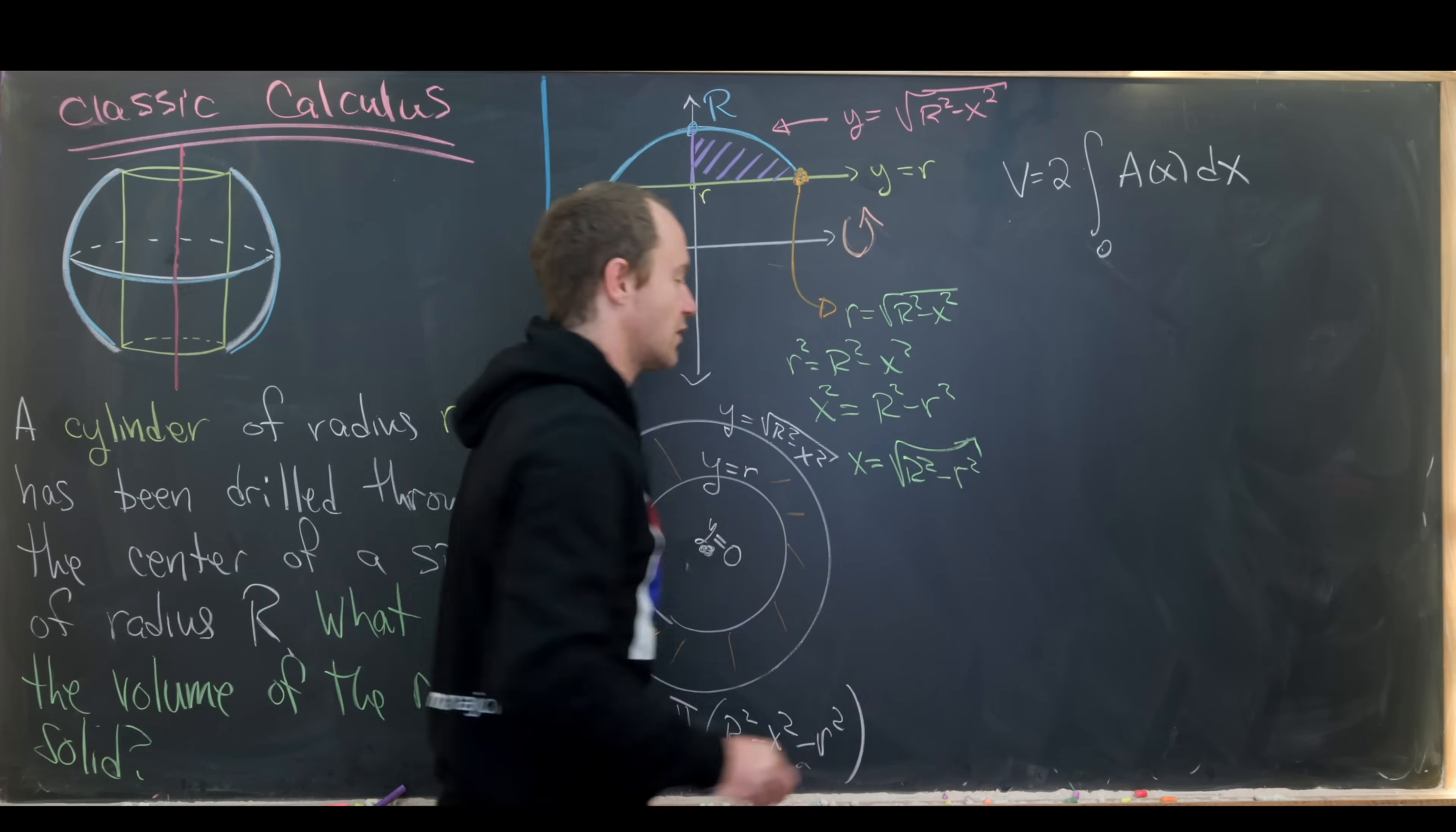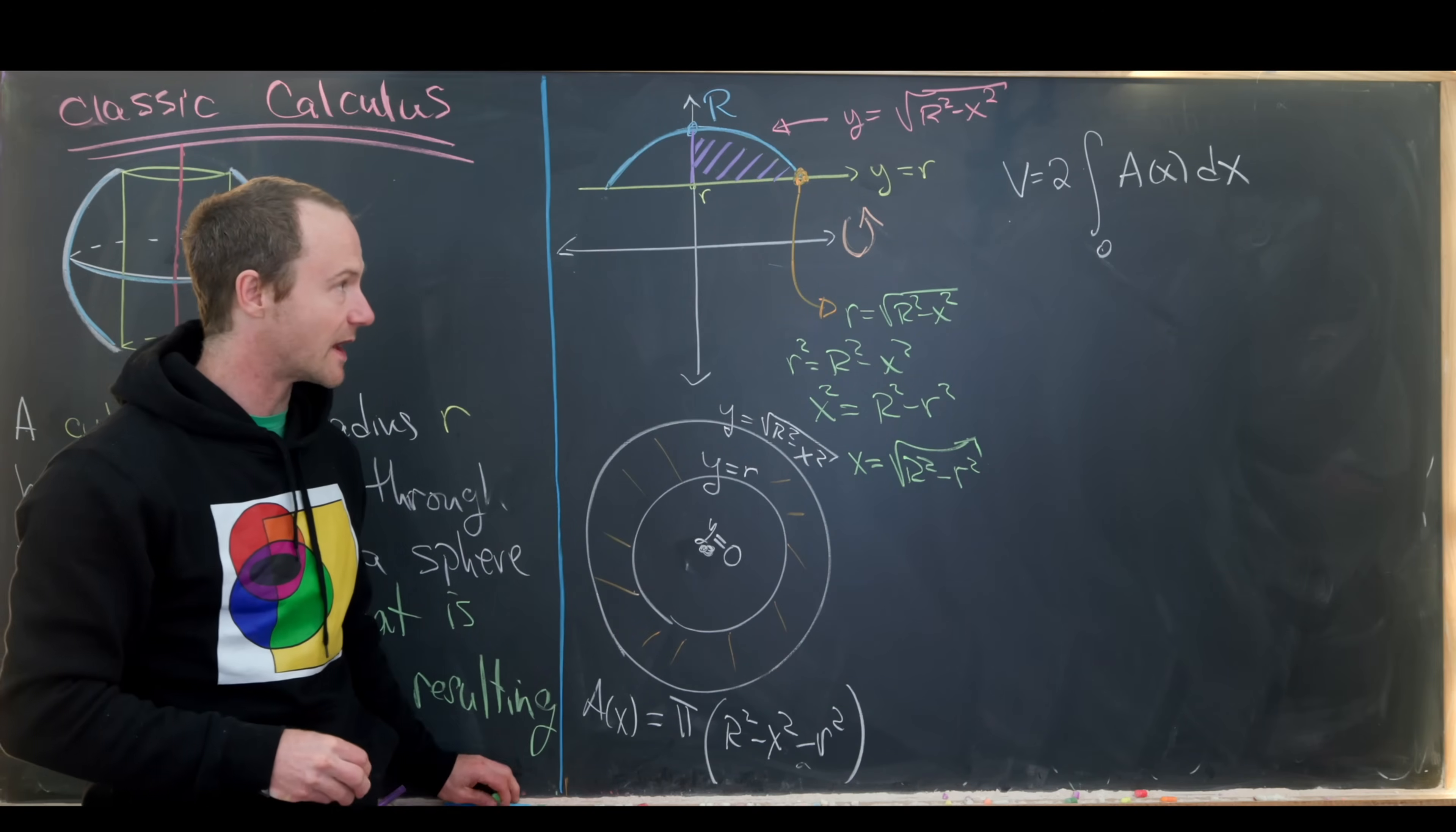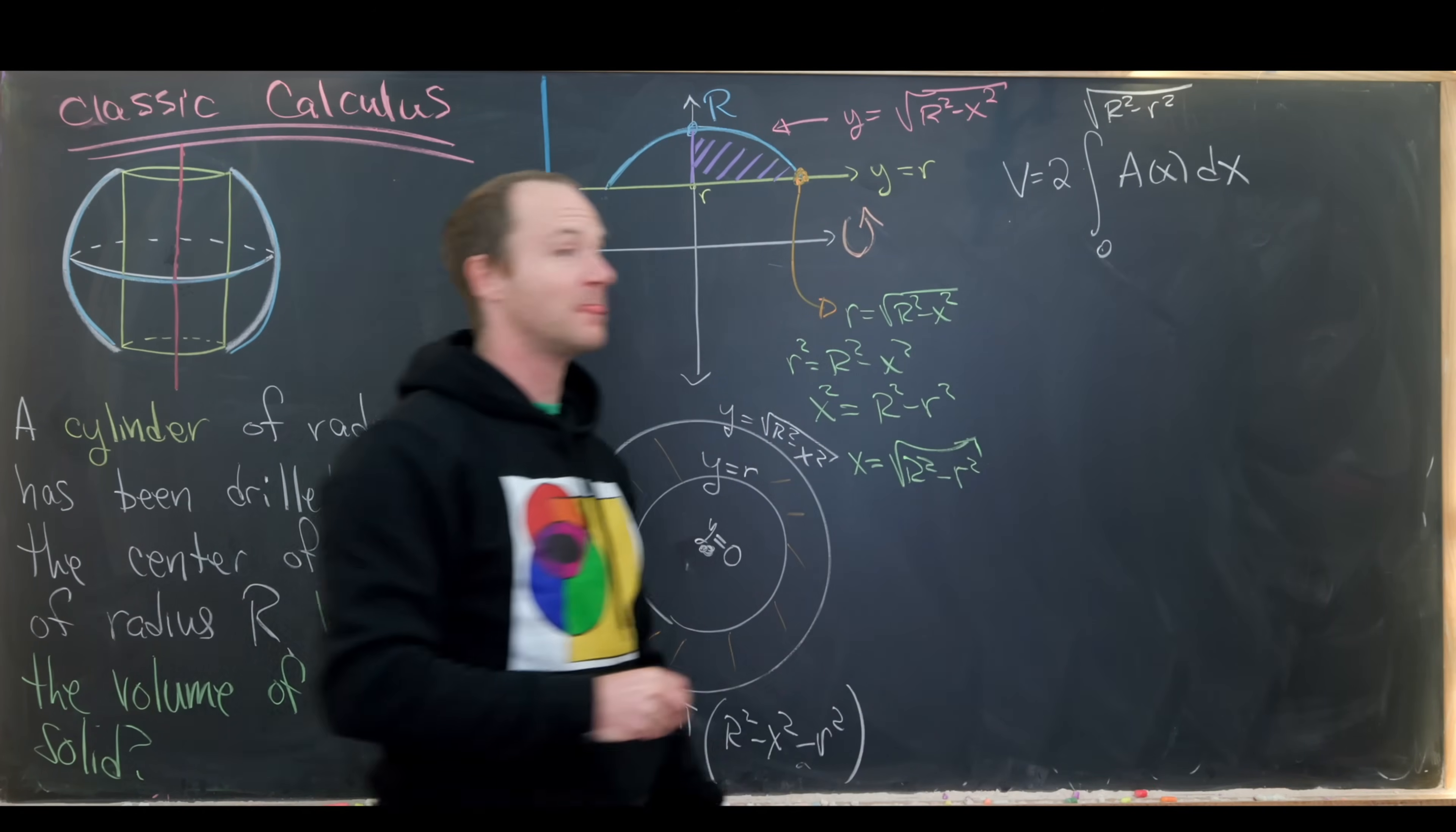Or x equals the square root of R squared minus r squared, where I know that I can take the positive square root because I'm looking for this point. The negative square root would be over there, but I'm taking care of that with just symmetry. So that means here I can put the square root of capital R squared minus little r squared. And now I'm all set. Now I can plug this value into our area function and then evaluate this integral.